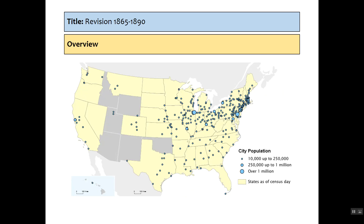Population is our biggest indicator for the United States changing. We saw that it became a country of 50 million, due to a naturally high birth rate as well as migration and immigration. You can see large cities — New York, Chicago, etc. — now containing more than a million individuals by 1890.